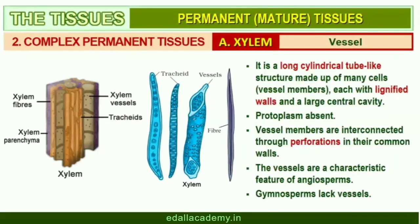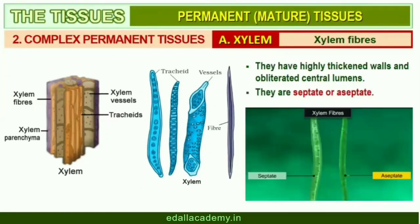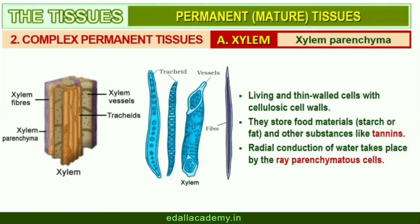A vessel is a long cylindrical tube-like structure made up of many cells called vessel members, each with lignified walls and a large central cavity. Vessel cells are also devoid of protoplasm. Vessel members are interconnected through perforations in their common walls. The presence of vessels is a characteristic feature of angiosperms. Xylem fibers have highly thickened walls and obliterated central lumens, and may be septate or aseptate. Xylem parenchyma cells are living and thin-walled, with cell walls made up of cellulose. They store food materials in the form of starch or fat, and other substances like tannins.